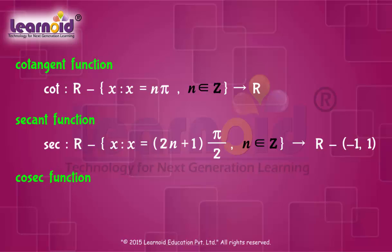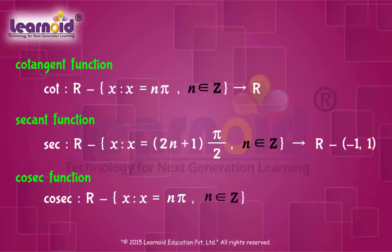Cosecant function for all real values of x, except x is equal to n pi, to values of R except minus 1 to 1.